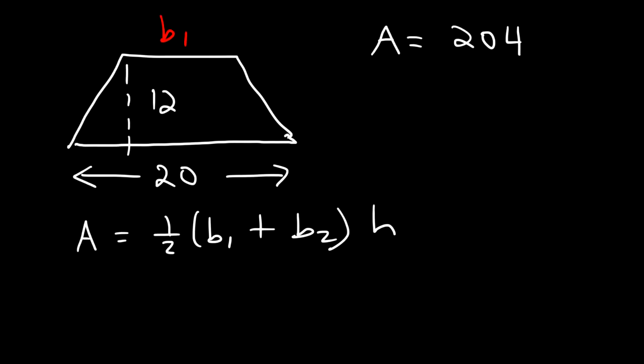So all you've got to do is first write the formula. Next, plug in everything that you have. We know that A is 204. We don't know the value of b₁, so we're just going to rewrite it as b₁. B₂ is 20, and h, the height, is 12.